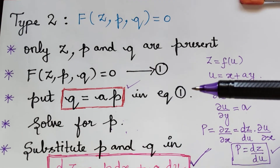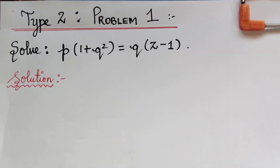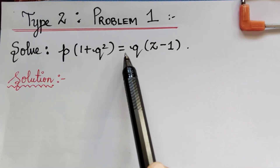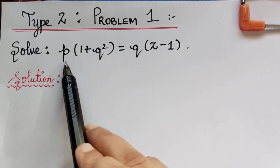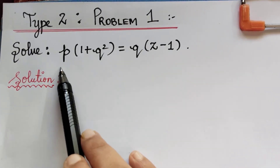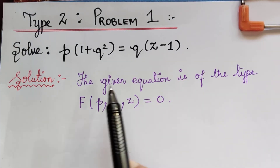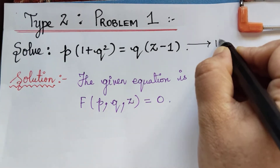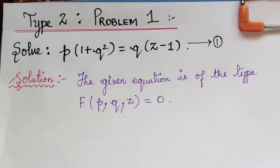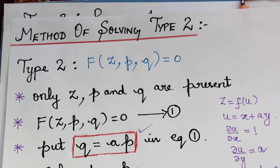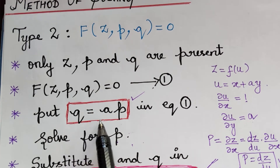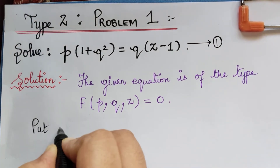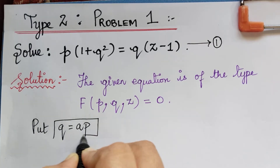Now here we have the first problem under type 2. The given question is: solve p multiplied with 1 plus q squared equals q multiplied with z minus 1. We observe that we have only p, q, and z in this equation, and therefore this equation is of the standard type 2. We write that the given equation is of the type f of p, q, z equal to 0, and mark the given equation as equation 1.